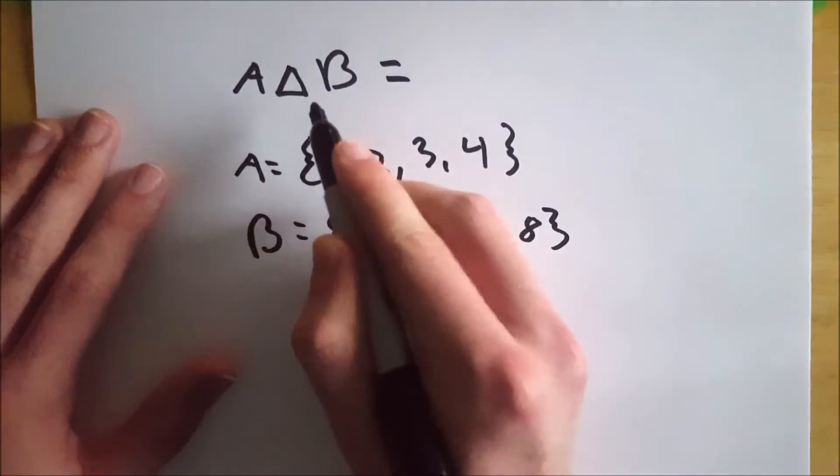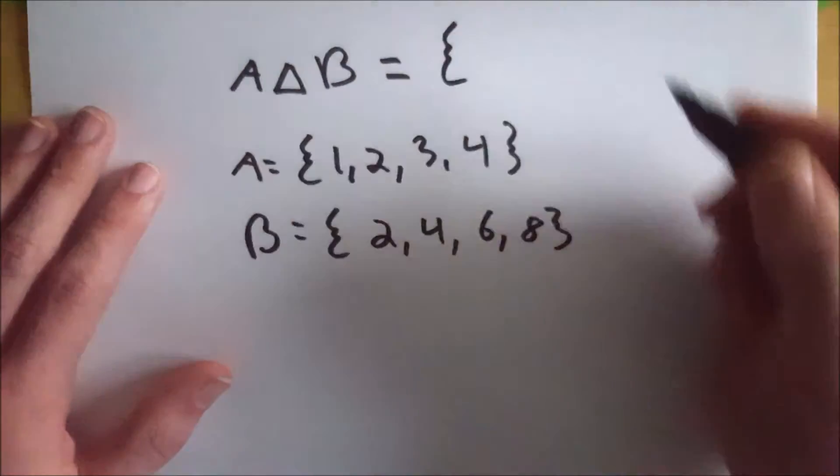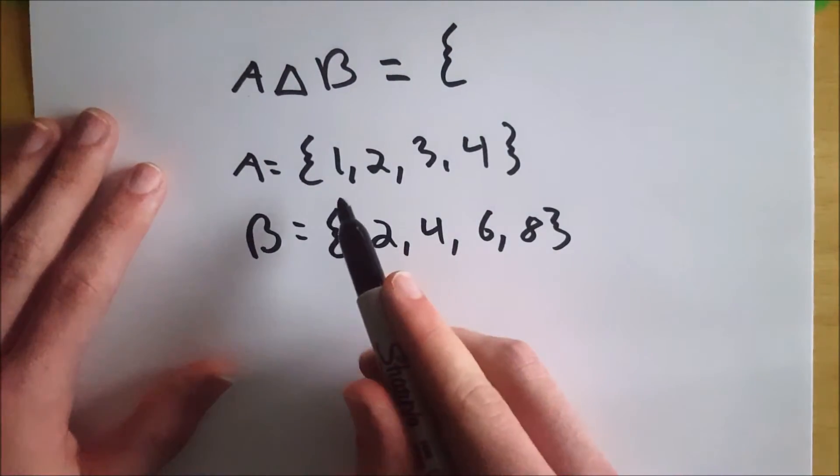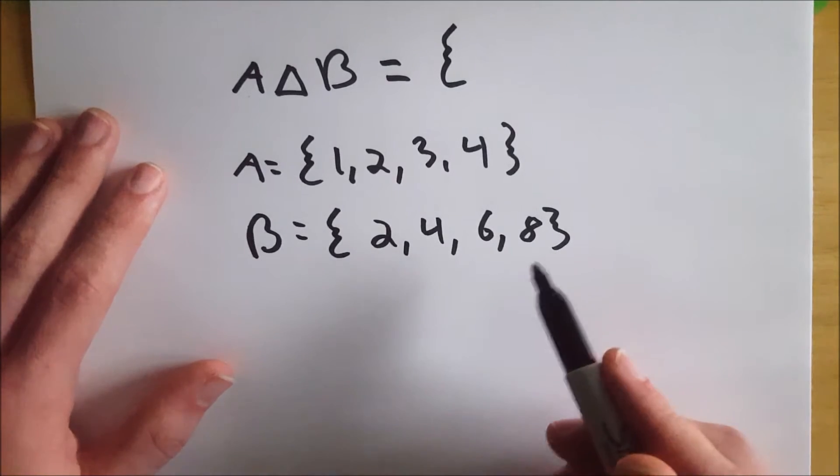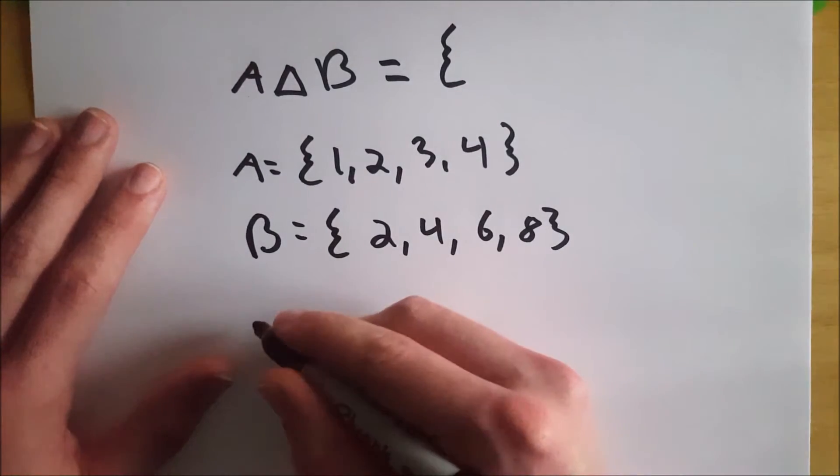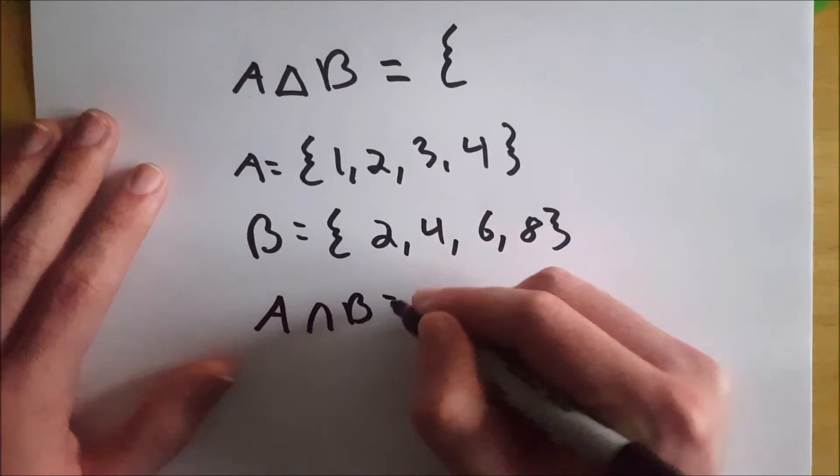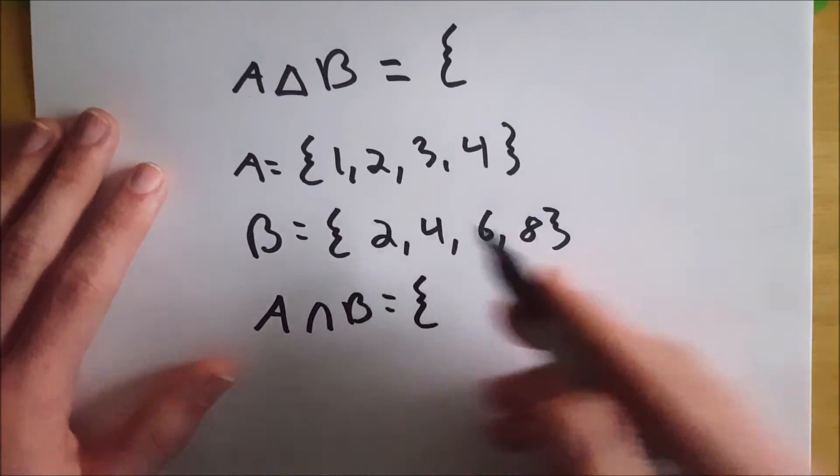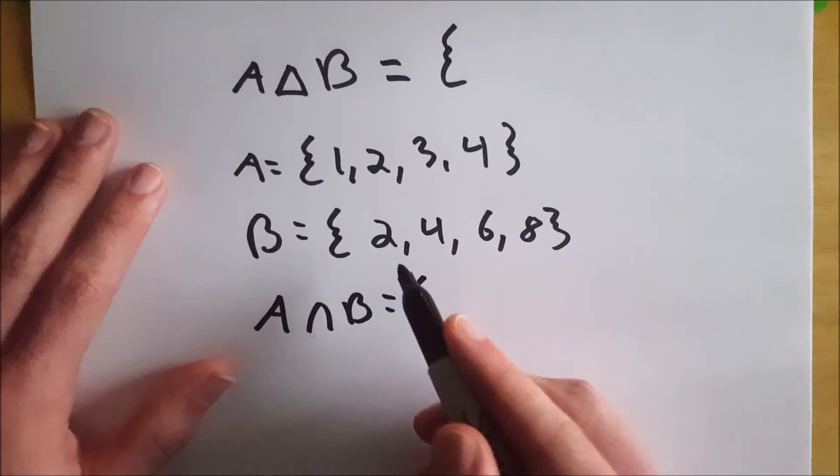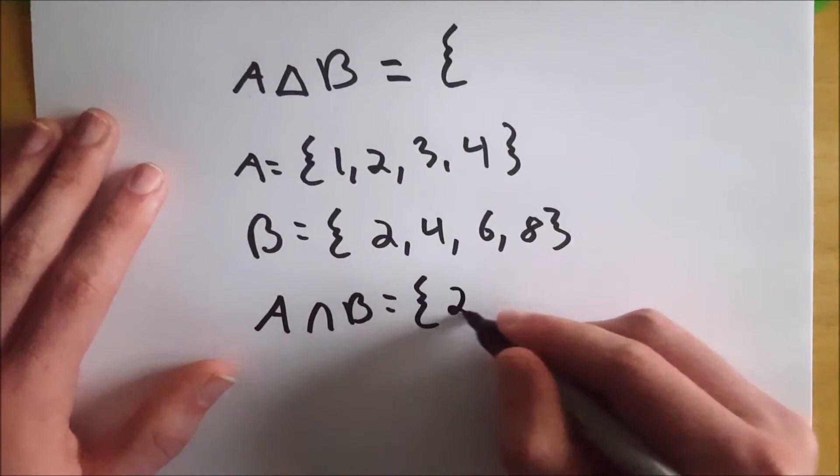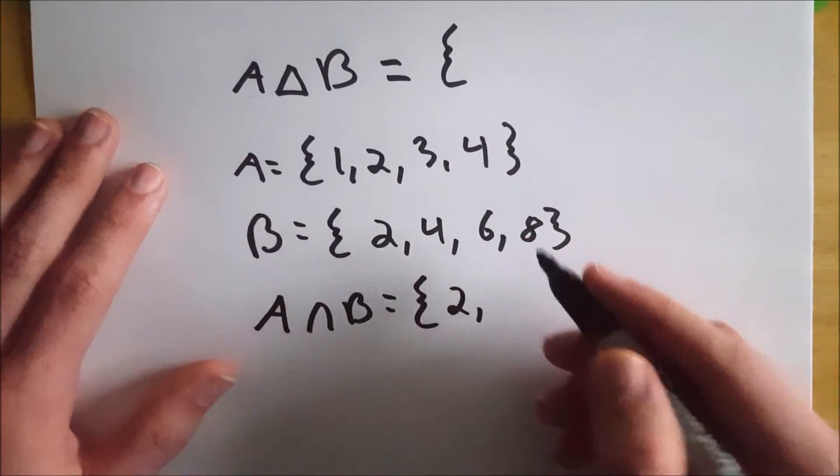Then our symmetric difference of A and B, like I said, is every element that's in either A or B excluding the elements that are in both. So to find the elements that are in both, of course, that's the intersection of A and B, which is going to be just 2 and 4 in this set because A and B both have 2 and 4.